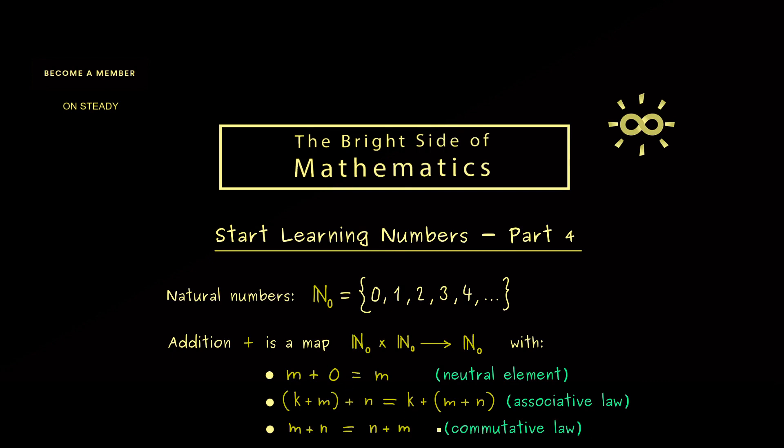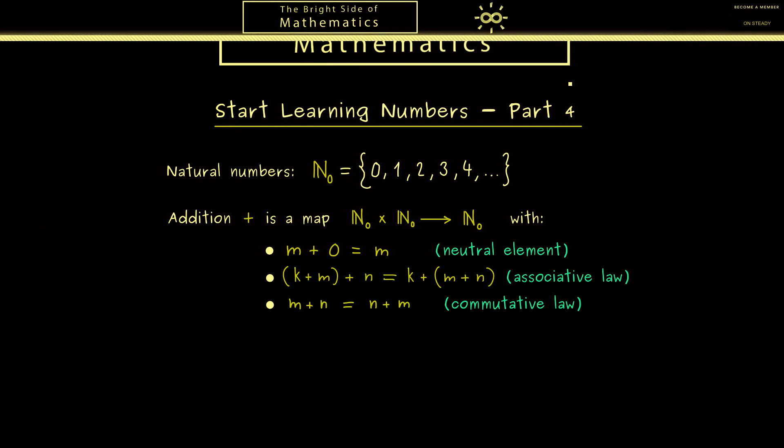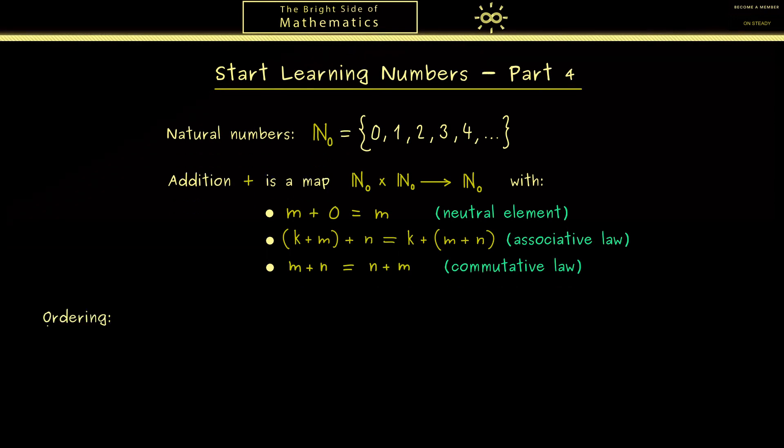Okay, with this we have everything for the addition, but of course you already know the natural numbers have even more structure. For example, we know how the numbers are ordered. Ordering just means when is a number greater or equal than another number. Hence we now give a meaning to the symbol we read as n is less or equal than m.